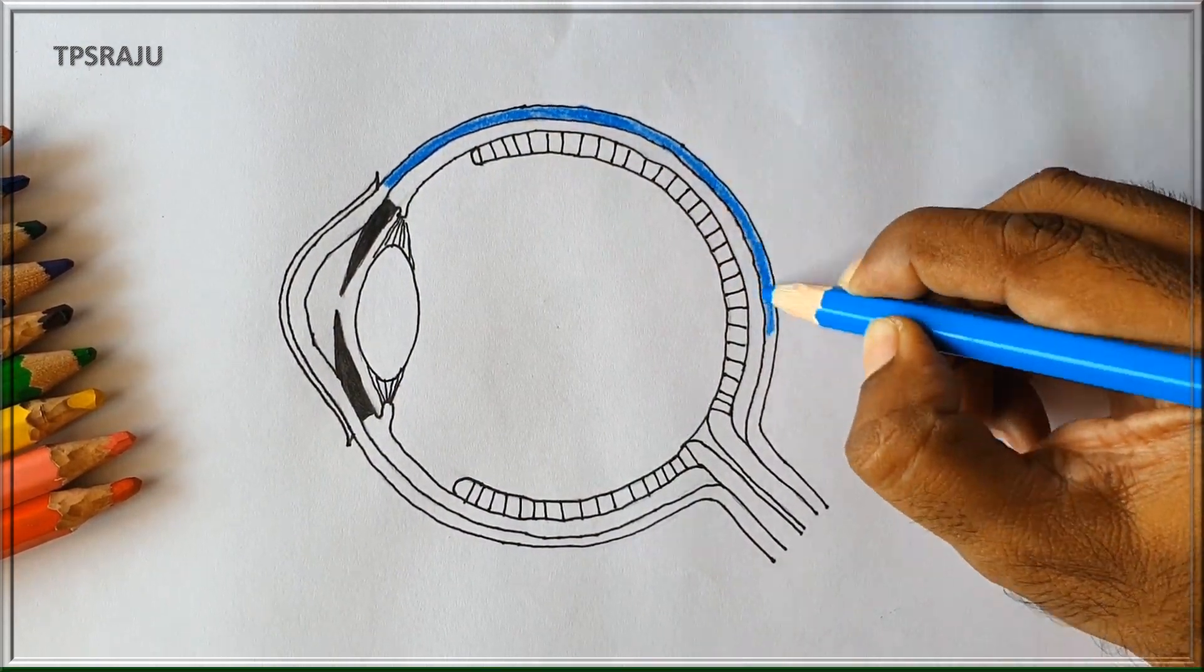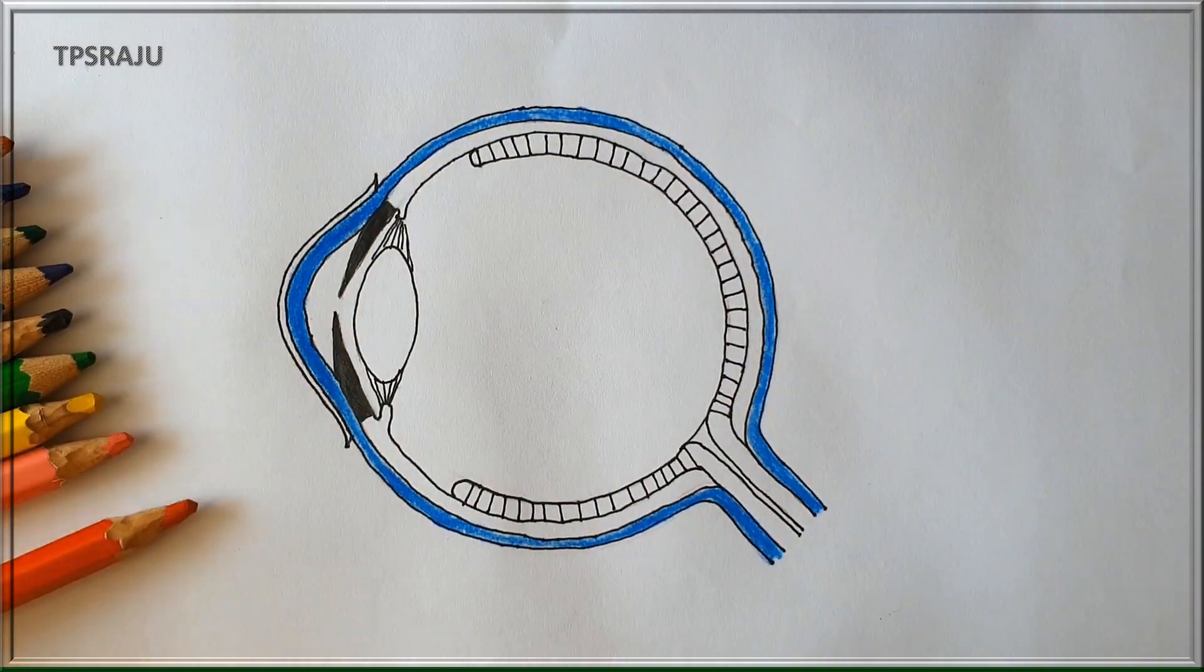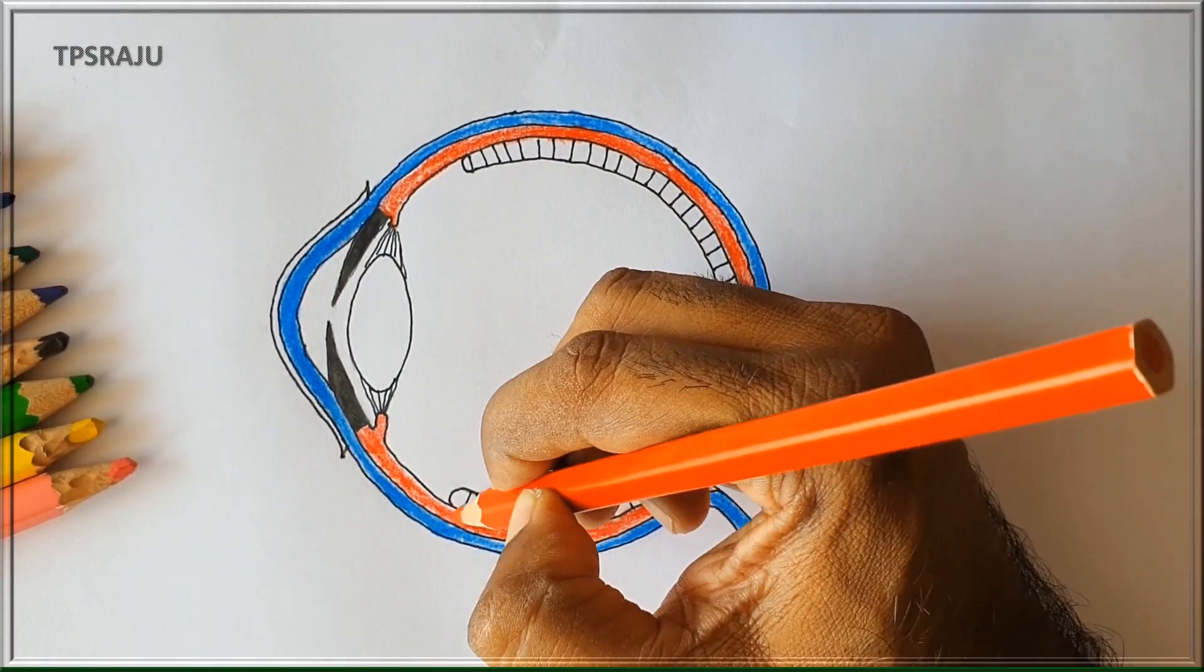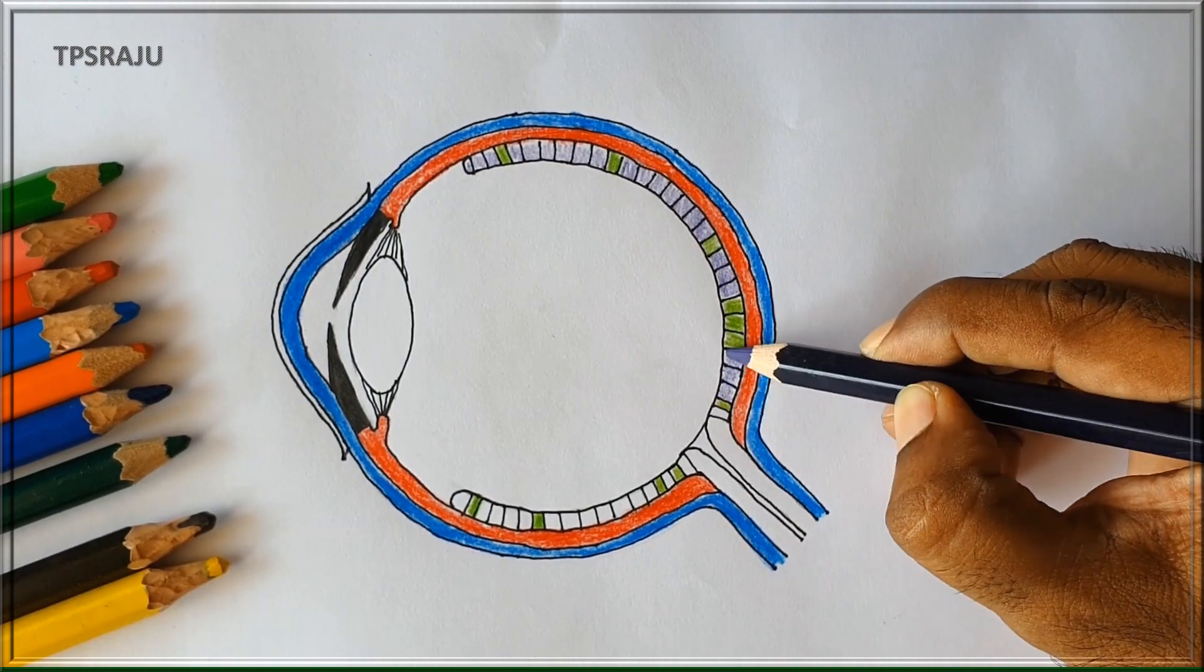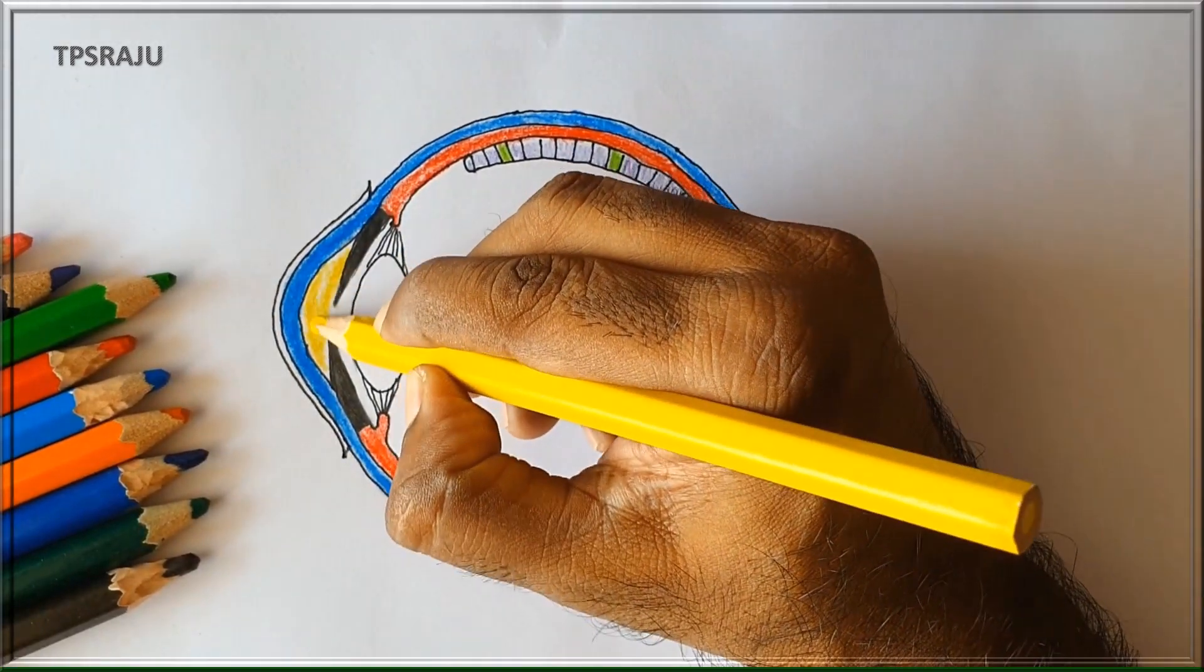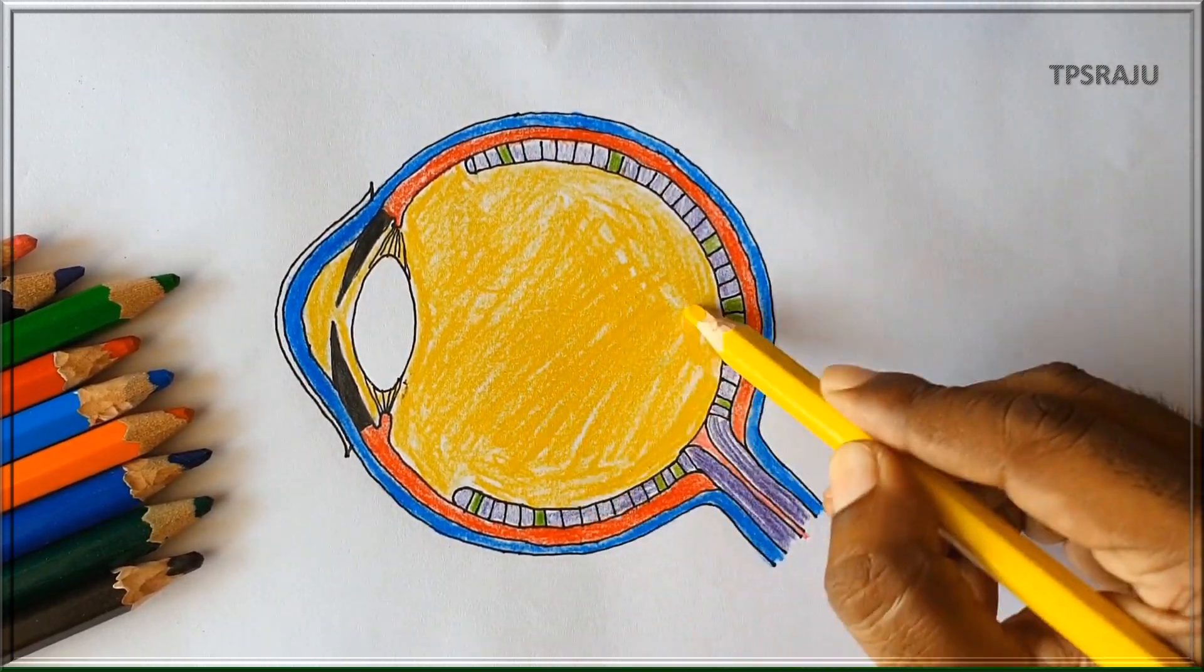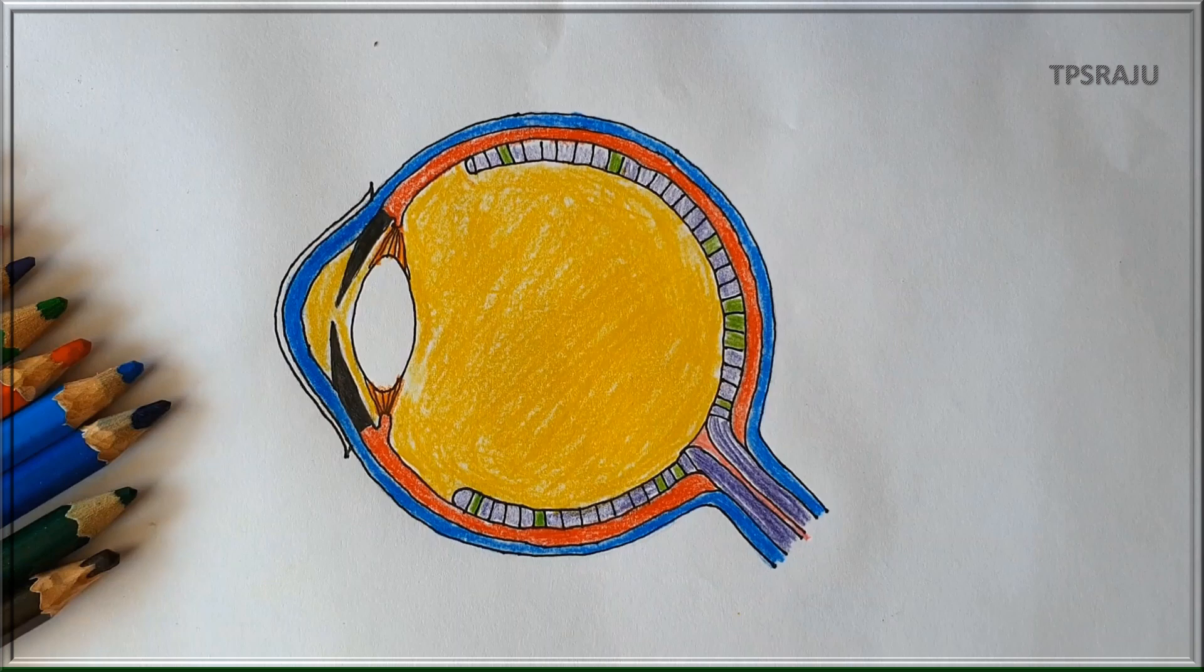We are applying blue color to sclerotic layer. This is cornea. Applying red color to choroid layer. Green color to cones present in the retina. Violet color to rods present in the retina. This is optic nerve. Applying yellow color to aqueous chamber. This is vitreous chamber. Applying orange color to ciliary muscles. If we apply the colors once again perfectly, it will appear very beautiful. Let us see.